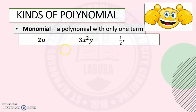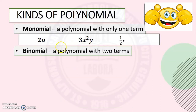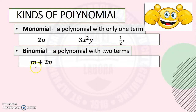The next kind of polynomial is binomial. It is a polynomial with two terms. Examples: m plus 2n — as you can see, it has two terms — 4r plus 2p, and st minus 2k.